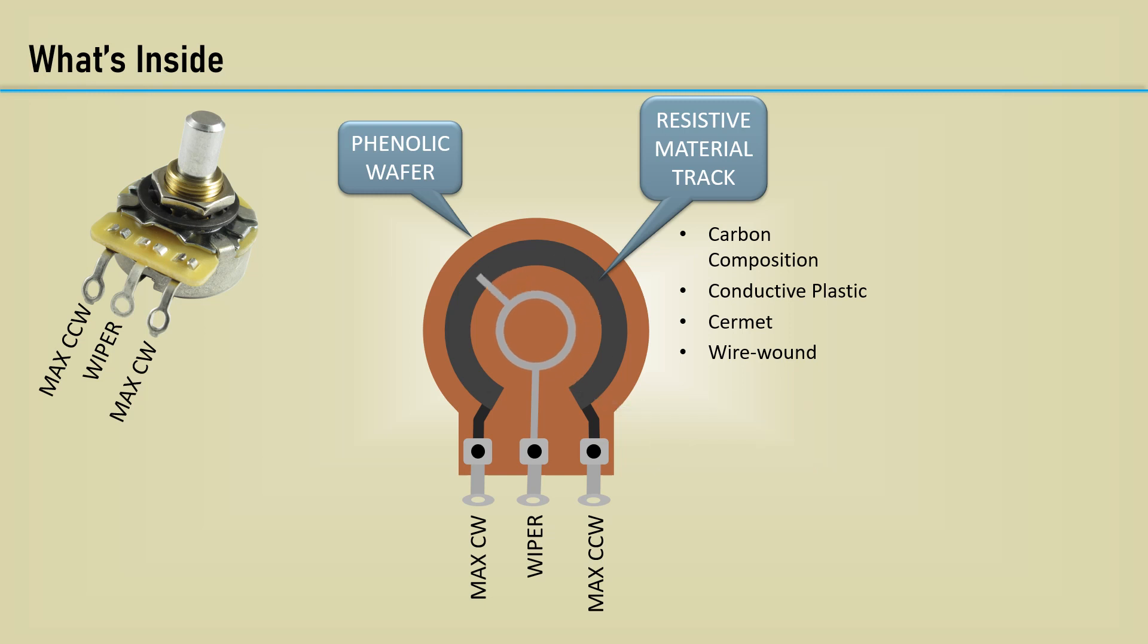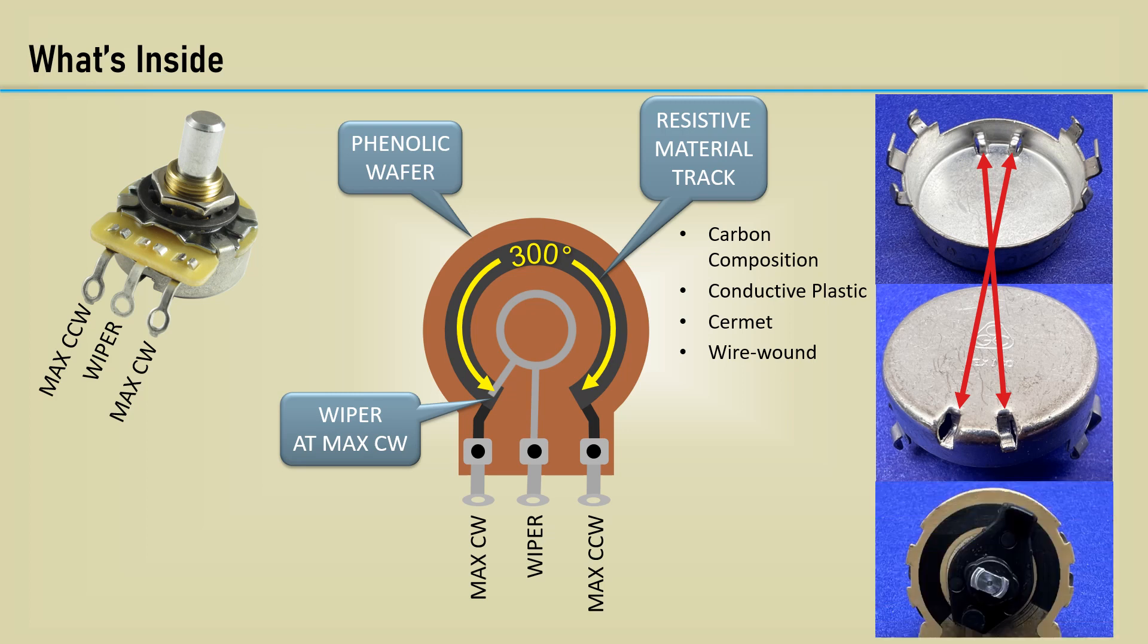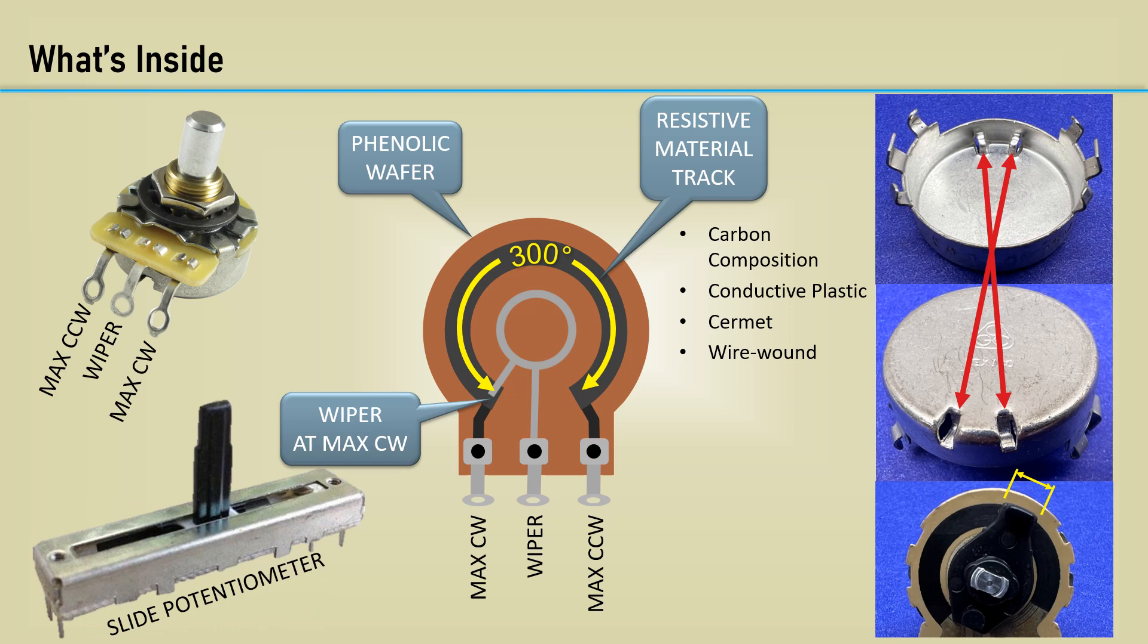Now the wiper is being turned to the maximum clockwise position. The rotational angle for the majority of rotary pots is 300 degrees. Small dimples are formed into the back cover of the pot. A rectangular feature is made as part of the rotary to strike against the dimples in the cover to limit rotation. Potentiometers are available in more than just rotary types. The slide potentiometer has the same basic internal features as rotary types, except everything works in line.